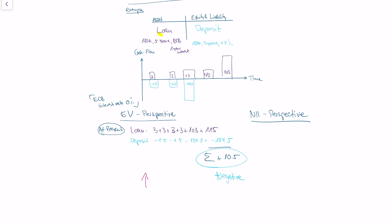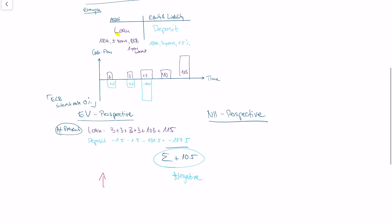If you would have to do a fire sale — if you would have to sell all your assets — do you actually make a profit or not? The NII perspective looks at your cash flows in time and tells you if you have liquidity gaps in the future. Both perspectives tell you if there is risk and if you need to take action, because if there is too much risk involved, you as a risk manager at a bank need to take action immediately.